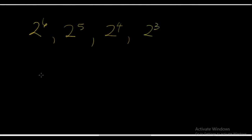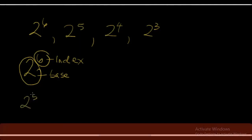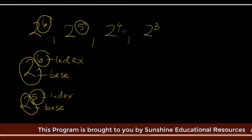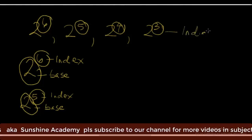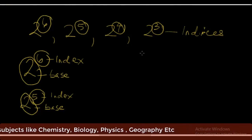Now let's try to understand some basic concepts about these numbers. For example, in 2 raised to the power 6, this 2 here is called the base, and this 6 here is called the index. Similarly in 2 raised to the power 5, this 2 is called the base and this 5 is called the index. From what we've understood, these 6, 5, 4, and 3 are all called the indices. We call them indices.